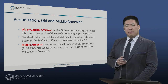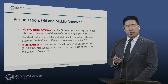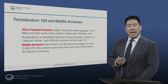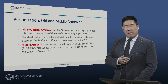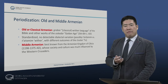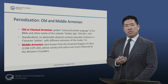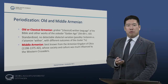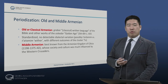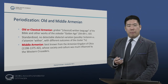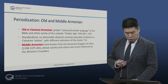Middle Armenian is best known from the Armenian Kingdom of Cilicia, which we have just seen on the historical map. That kingdom, from 1198 to 1375 AD, was much influenced in its society and culture by the Western Crusaders, with whom they were in frequent contact through trade, intermarriage, and so on.